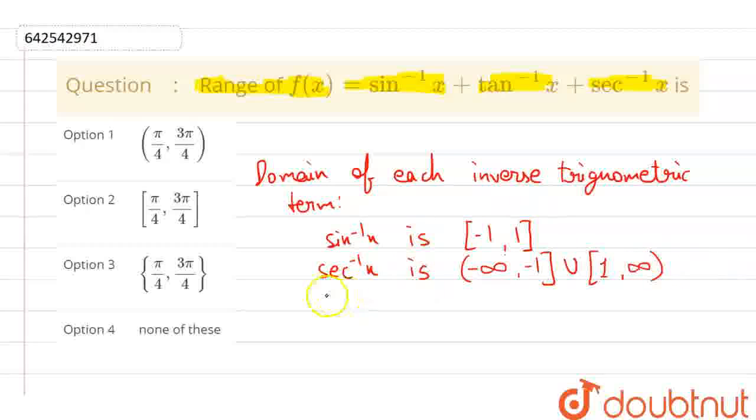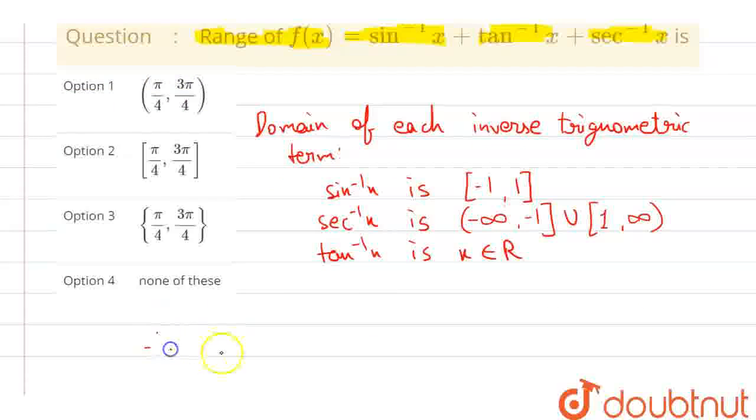And tan inverse x domain is x belongs to all real numbers. So therefore, the common domain from this is minus 1 to 1.